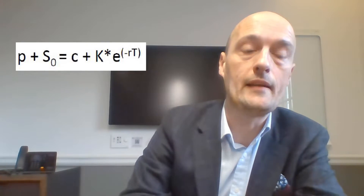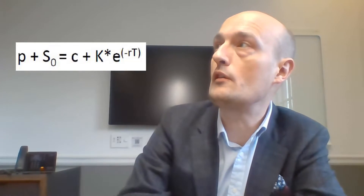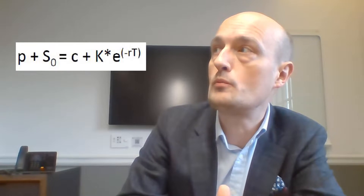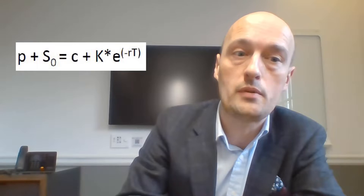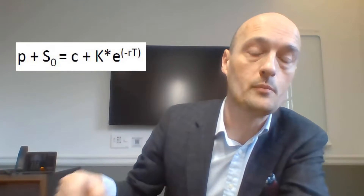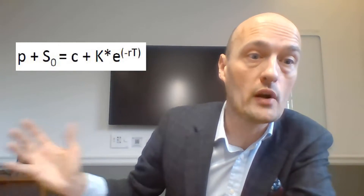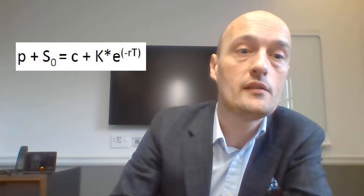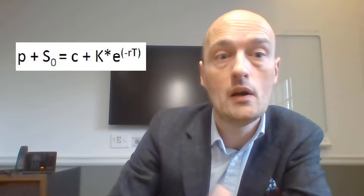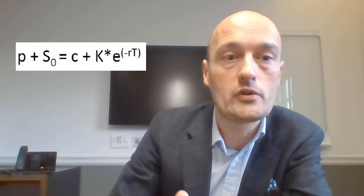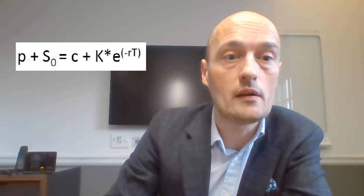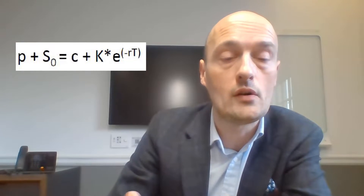Up on screen right now is our formula for put-call parity. The formula is: Put plus Spot equals Call plus the present value of the strike. That last bit — K times e to the negative rT — is just the present value of the strike. So when we combine our options with the underlying, we get the payoff of a different option, and it must follow this formula.